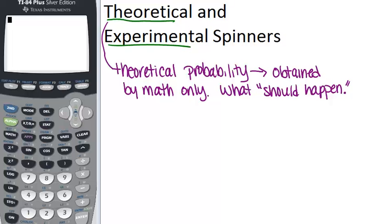On the other hand, experimental probability is what you get after actually doing an experiment. So if we're talking about spinning spinners, if you want to figure out an experimental probability, you actually have to spin spinners multiple times and see what happens.